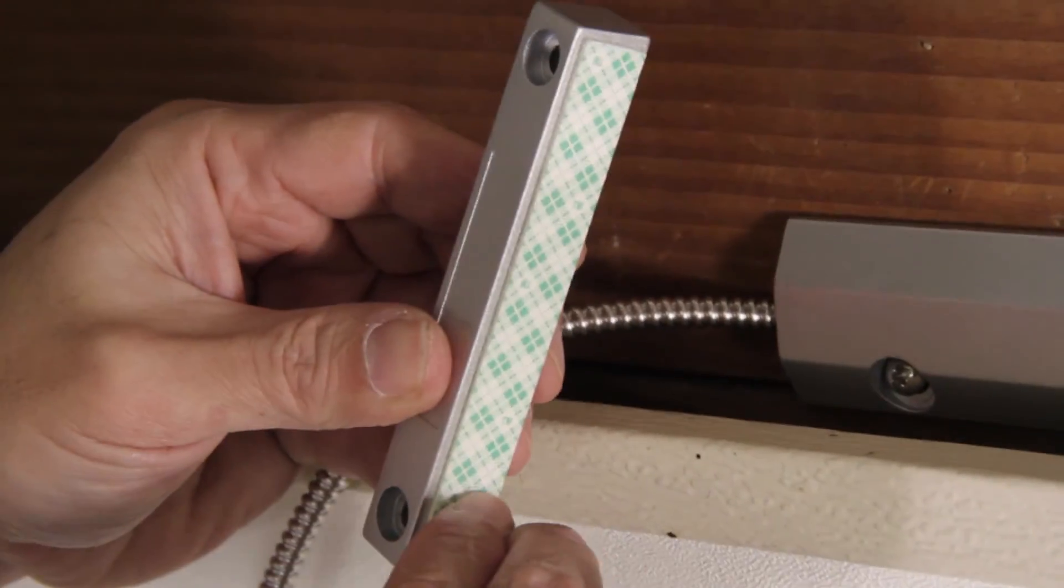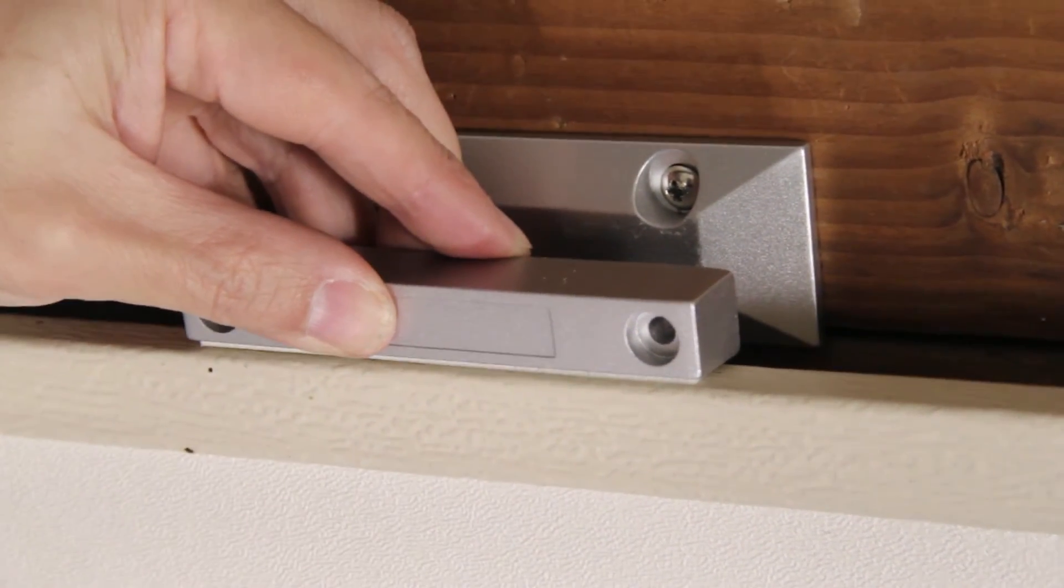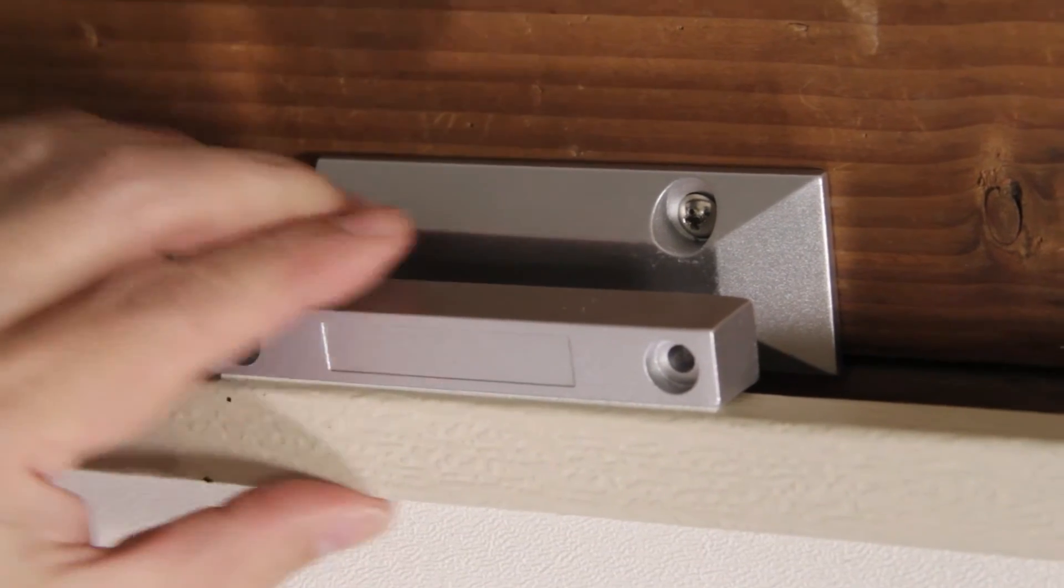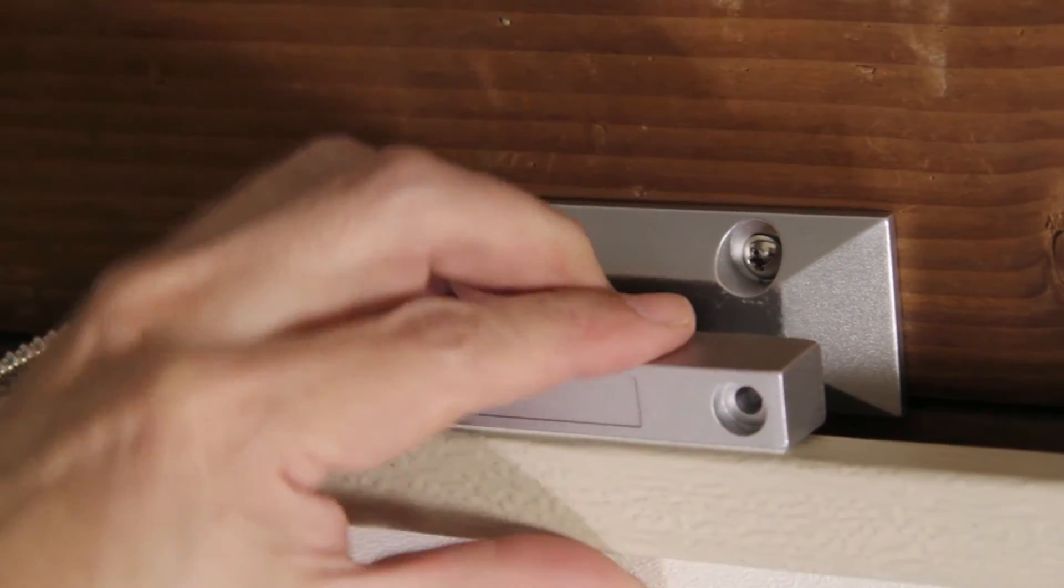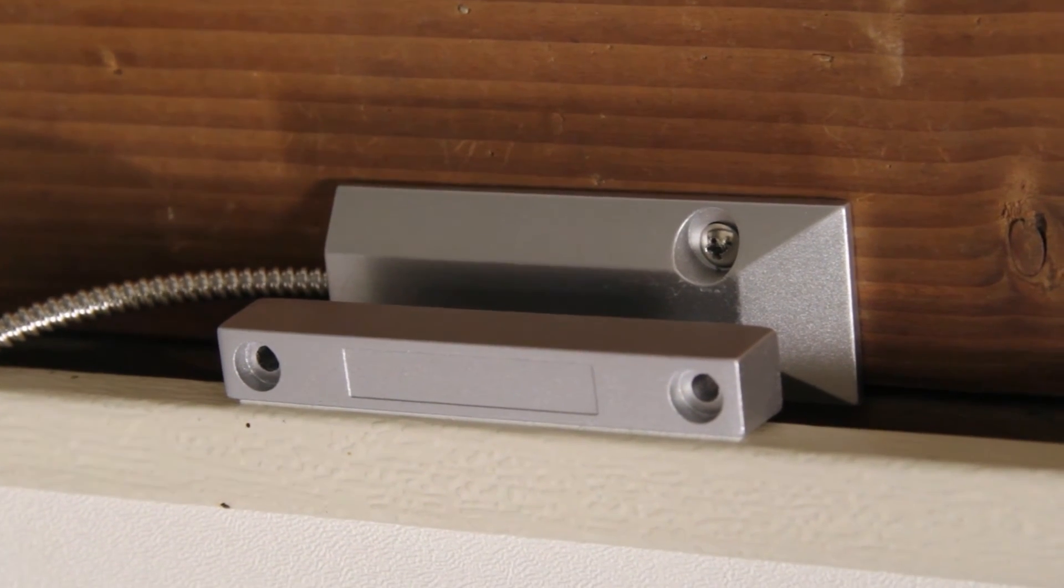The magnet has an adhesive at the bottom, so if you chose a part of your garage door that isn't magnetic, you can use that to stick it onto the door. Make sure the surface on which you're sticking the magnet is clean, and make sure that it's not going to fall off, especially when the door moves.